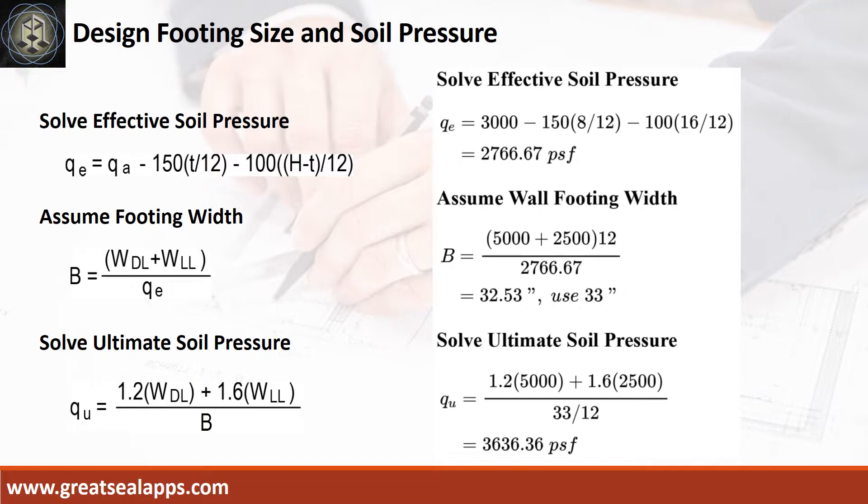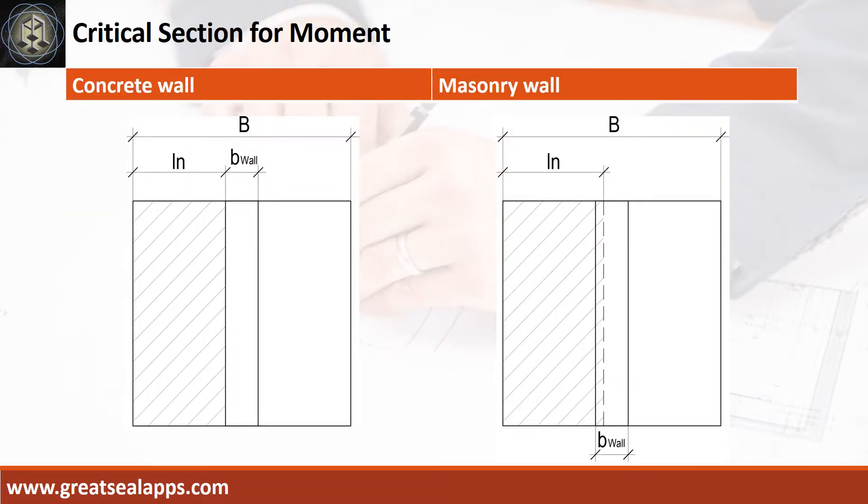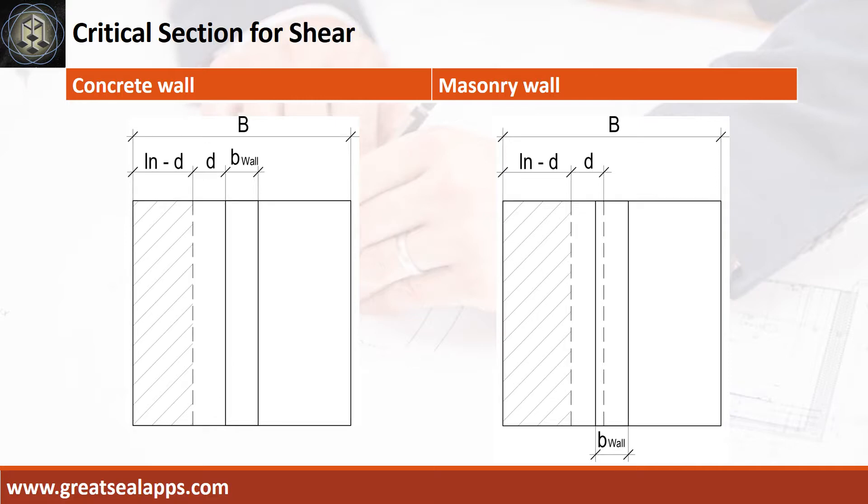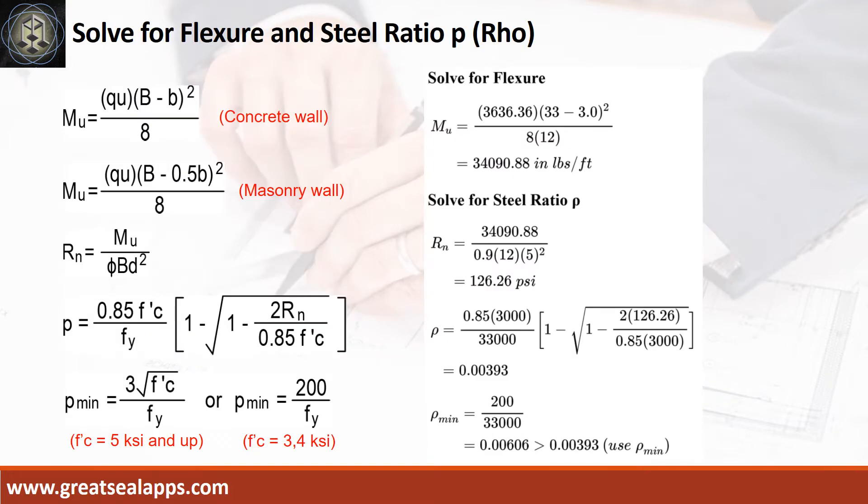Critical section diagrams for moment evaluation. Critical section diagrams for shear evaluation. Given ultimate soil pressure equals 3,636.36 PSF, footing width equals 33 inches, and masonry wall thickness equals 6 inches.